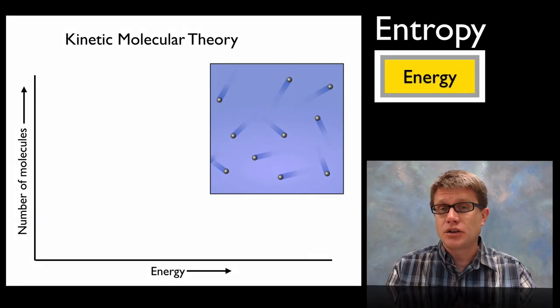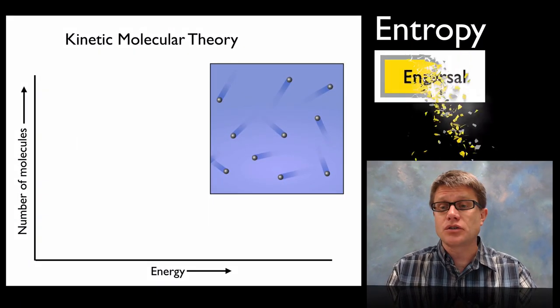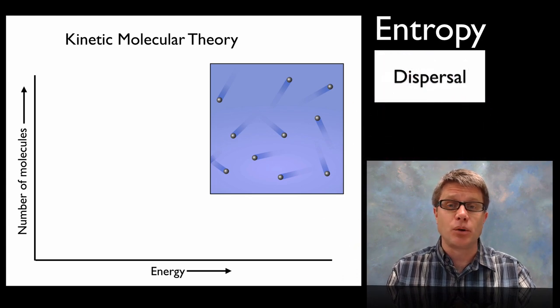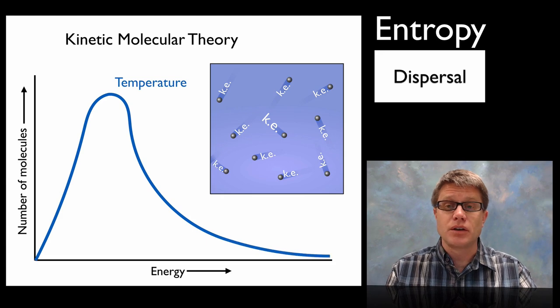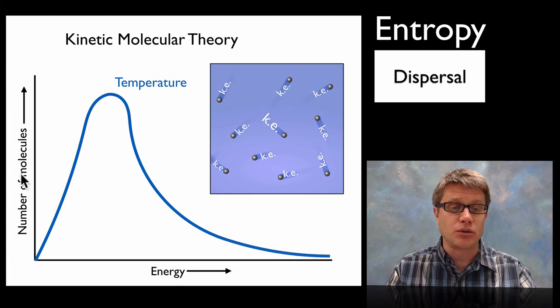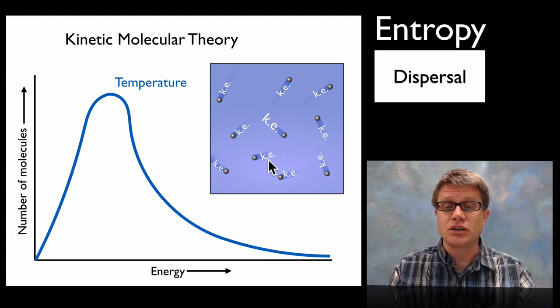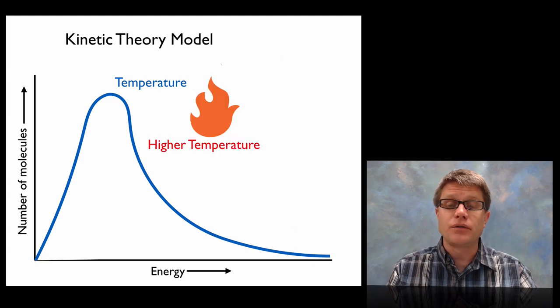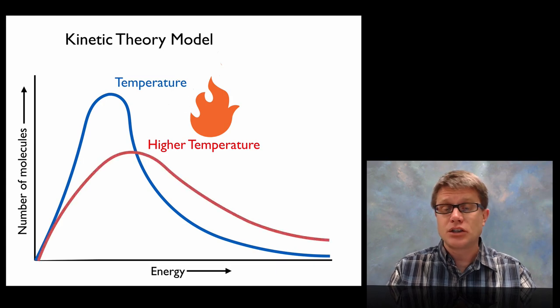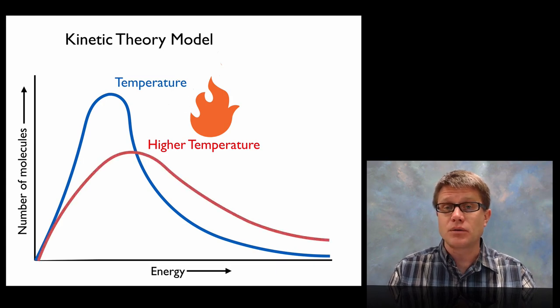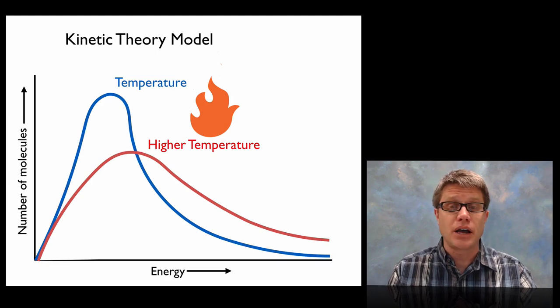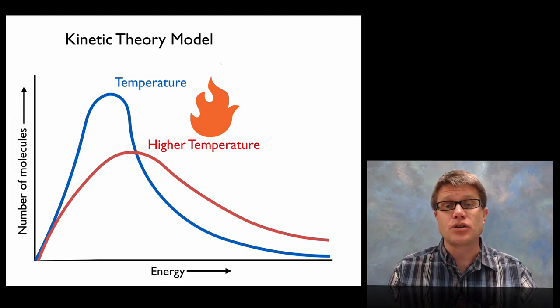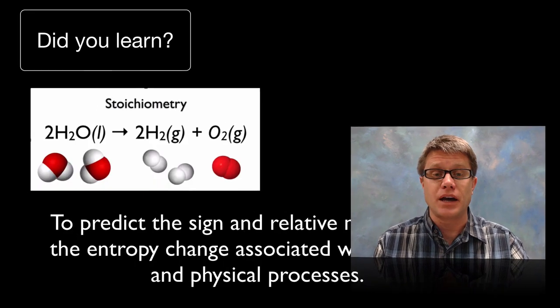So not only is entropy dispersal of matter, it's also dispersal of energy. So if we were to look at this Maxwell Boltzmann distribution of a gas, what we would see is a curve that looks like that. In other words these are going to be the number of molecules on the left. This is going to be their energy. You can see that some of them are going to have a high amount of kinetic energy. Some of them are going to be lower. But if we increase the temperature, what does that curve look like? It's shifting everything over to the right side. So we're going to have more molecules that have a higher amount of energy. And so what's that doing to our entropy? It's increasing the entropy. Because we are increasing the dispersal of that energy.